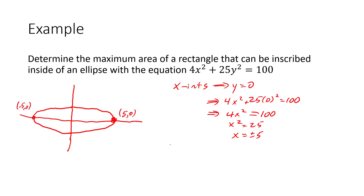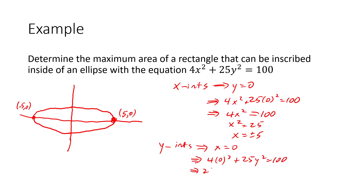Similarly, our y-intercepts occur where x equals 0. So we have 4(0)² plus 25y² equals 100, meaning 25y² equals 100, y² equals 4, so y equals plus or minus 2. We have intercepts at (0, 2) and (0, −2).